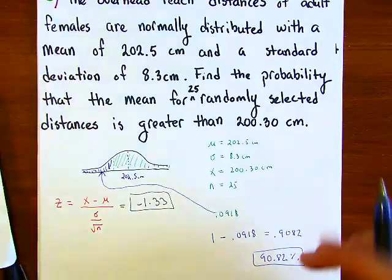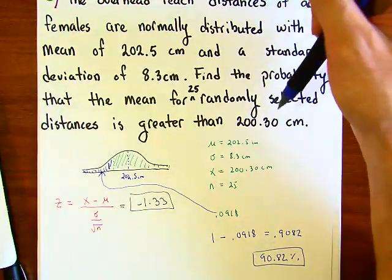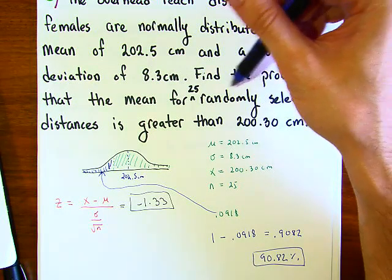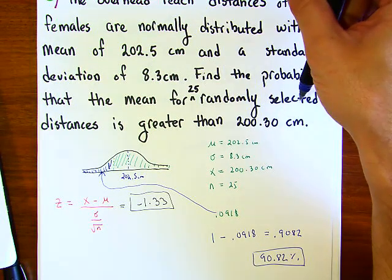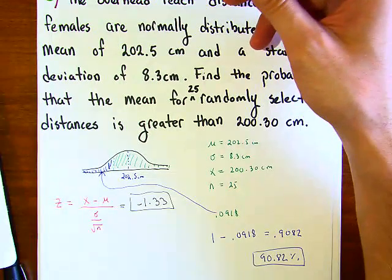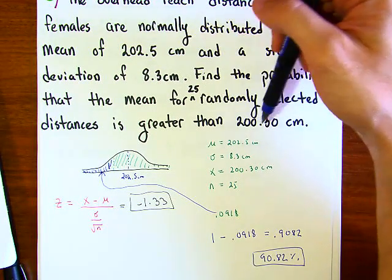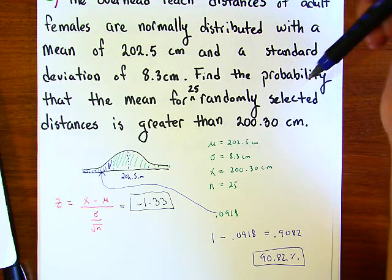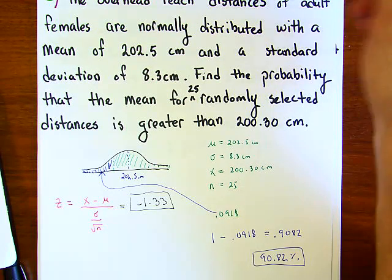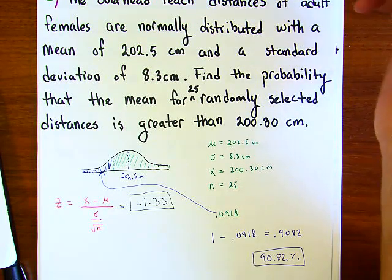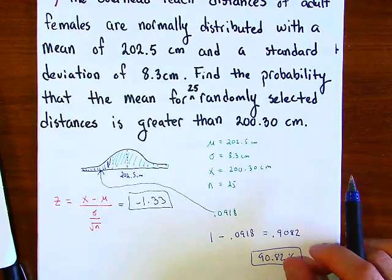So there is a 90.82 percent chance that the probability for 25 randomly selected people will have an overhead reach distance of greater than 230 centimeters for adult females. That was the answer.